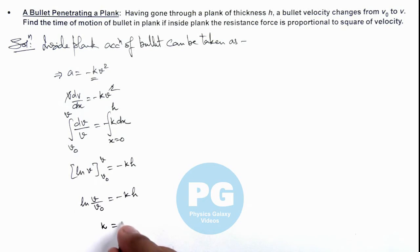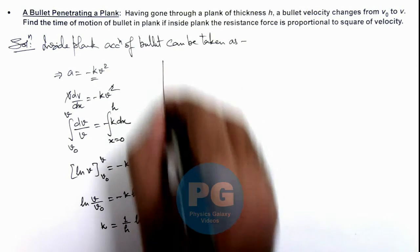Which is equal to (1/h), and this negative sign we can use in reversing the sign of this ratio. So k = (1/h)ln(v₀/v).